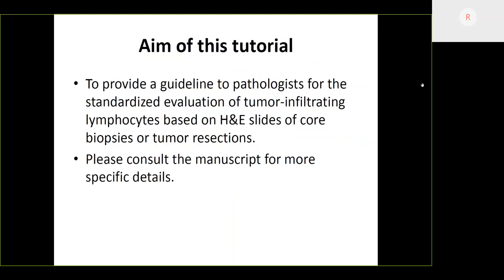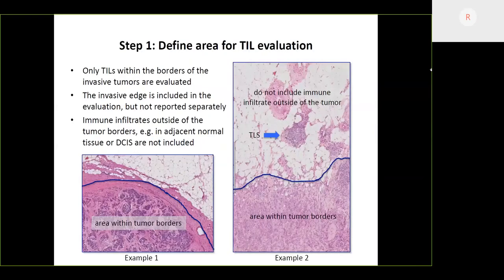This is a freely available tutorial on our website, www.tilsinbreastcancer.org. We will be developing new educational tools in the next month. The most important thing to start — and this is a challenge for machine learning tools — is to define the boundaries of the cancer, because the boundaries of the cancer are where we count the TILs in. The first thing we do when we score any biomarker is define where we should score it, so we need to define the borders.